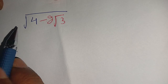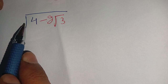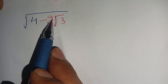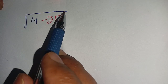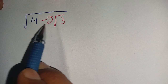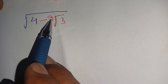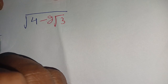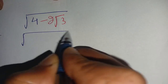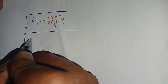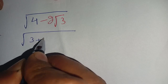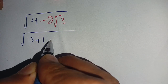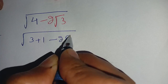Hello everyone. In today's video we are going to solve this radical problem: square root of 4 minus 2 square root of 3. You can see that the square root is over the whole expression, meaning that 4 minus 2 square root of 3 is under the square root. Now let us solve this. We can write 4 in terms of 3 plus 1, because 3 plus 1 equals 4, giving us square root of (3 plus 1 minus 2 square root of 3).